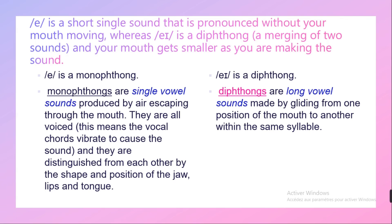Monophthongs are all voiced, which means the vocal cords vibrate to cause the sound, and they are distinguished from each other by the shape and position of the jaw, lips, and tongue. The sound /eɪ/ is a diphthong, and diphthongs are long vowel sounds made by gliding from one position of the mouth to another within the same syllable.